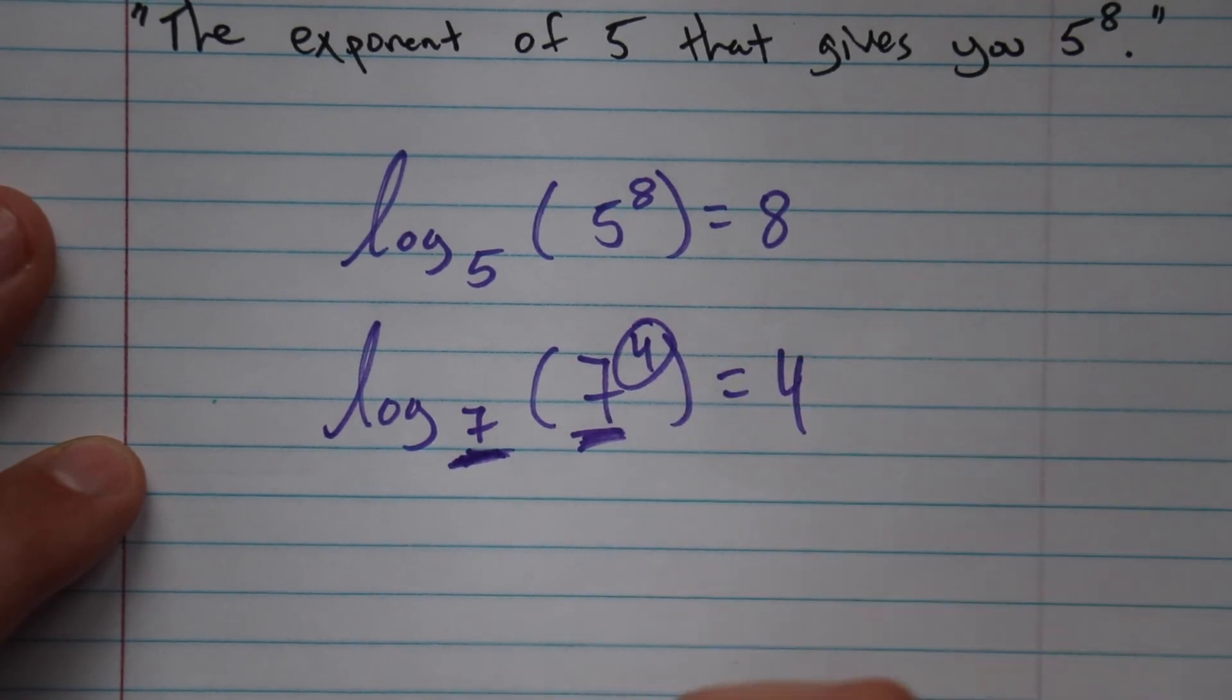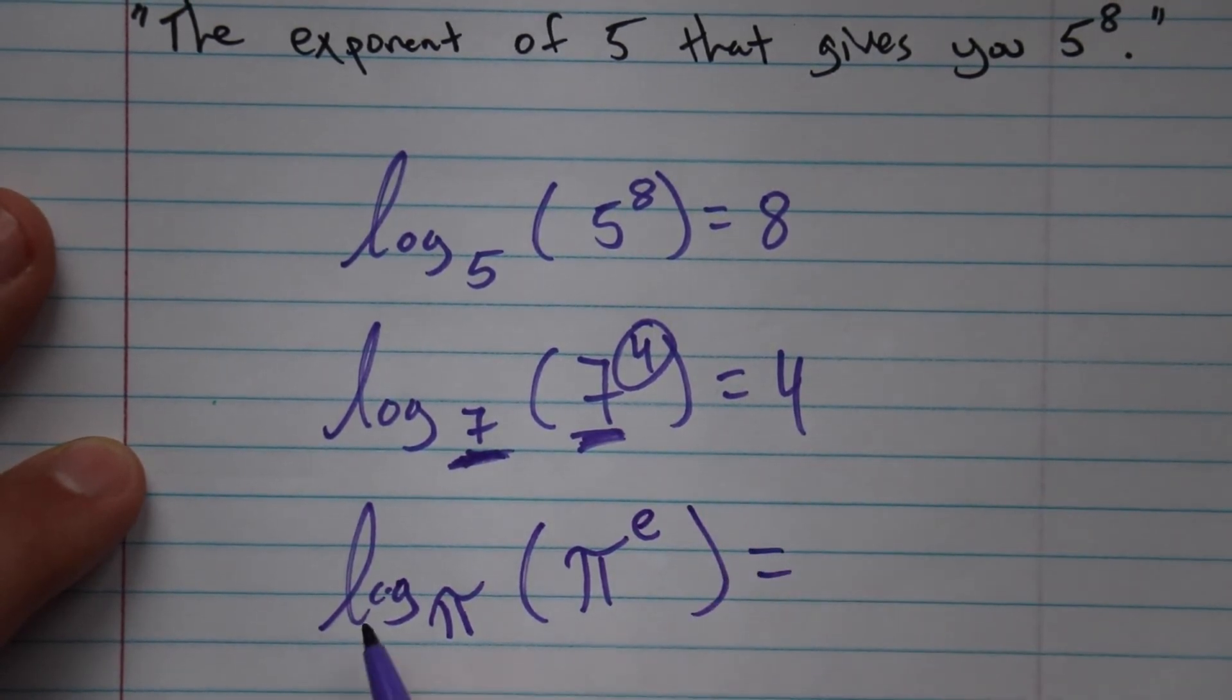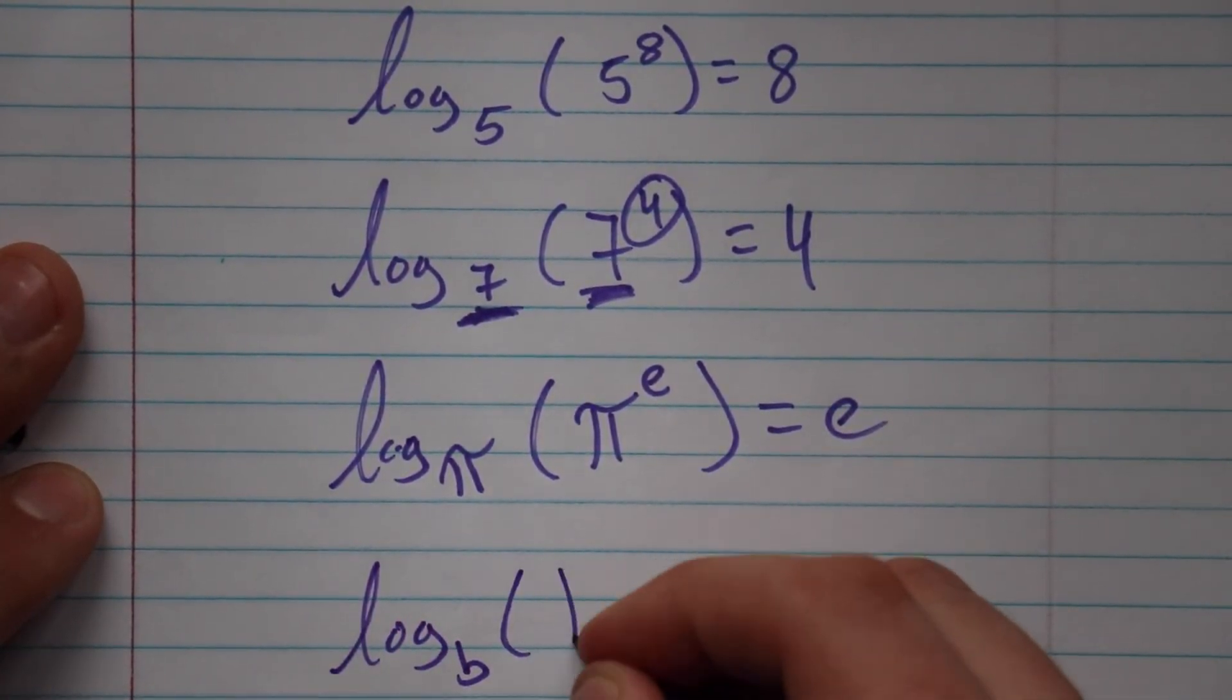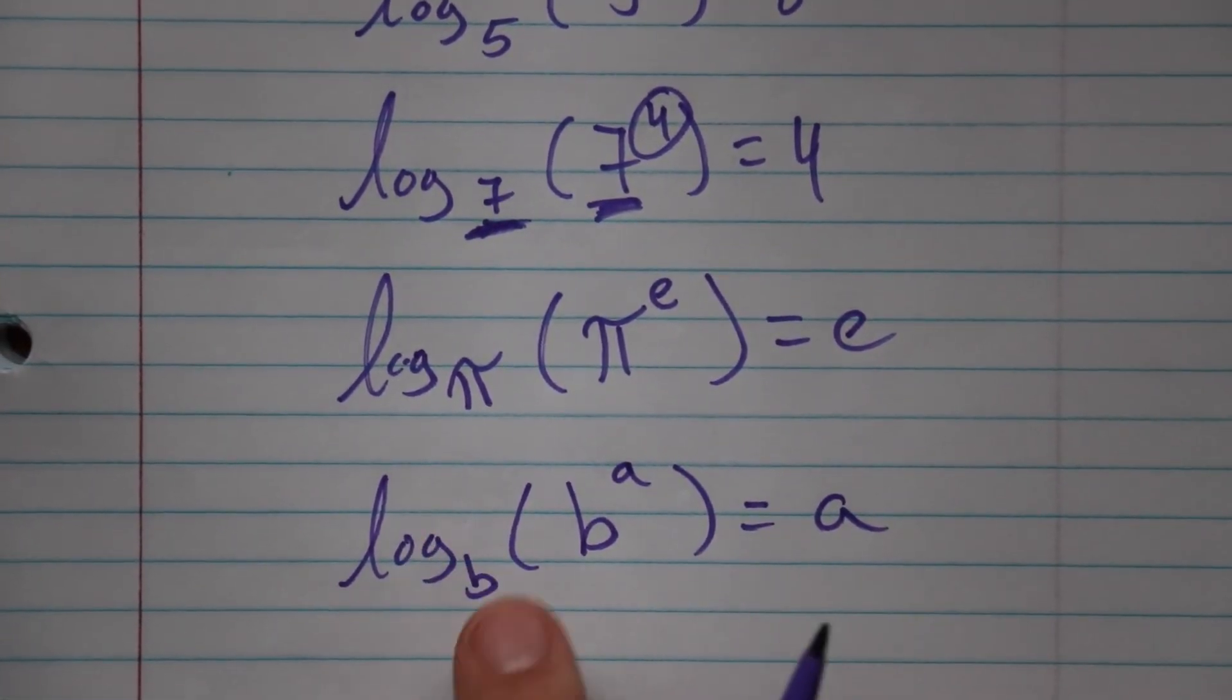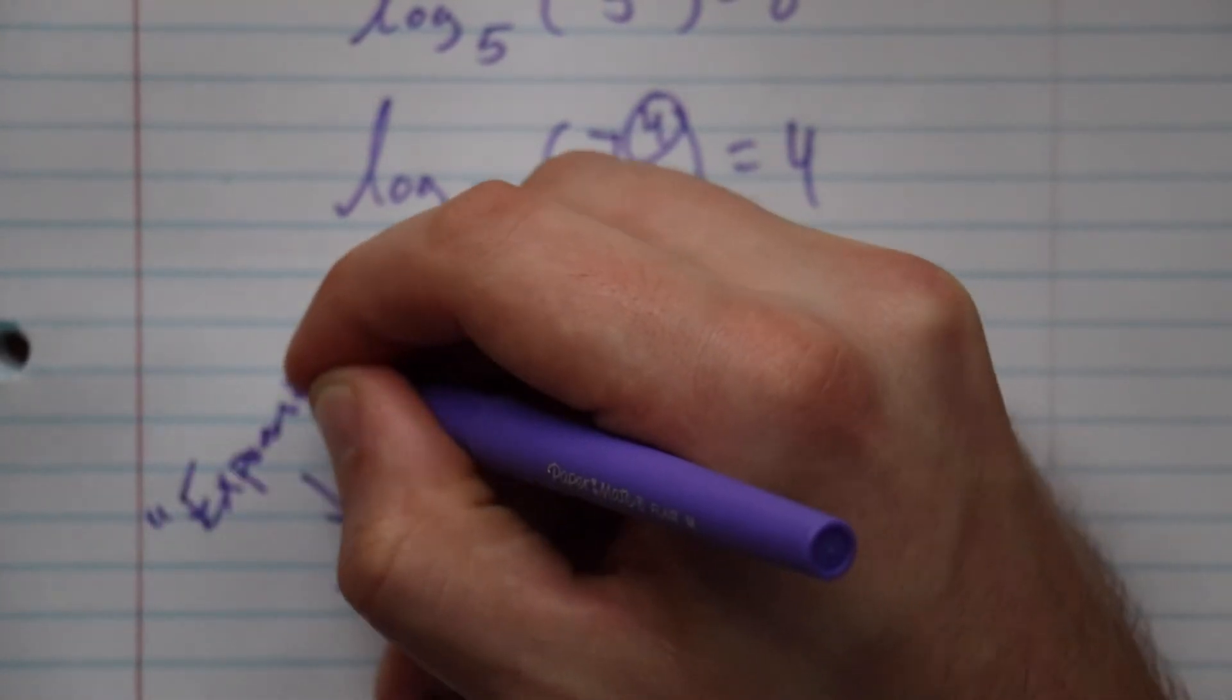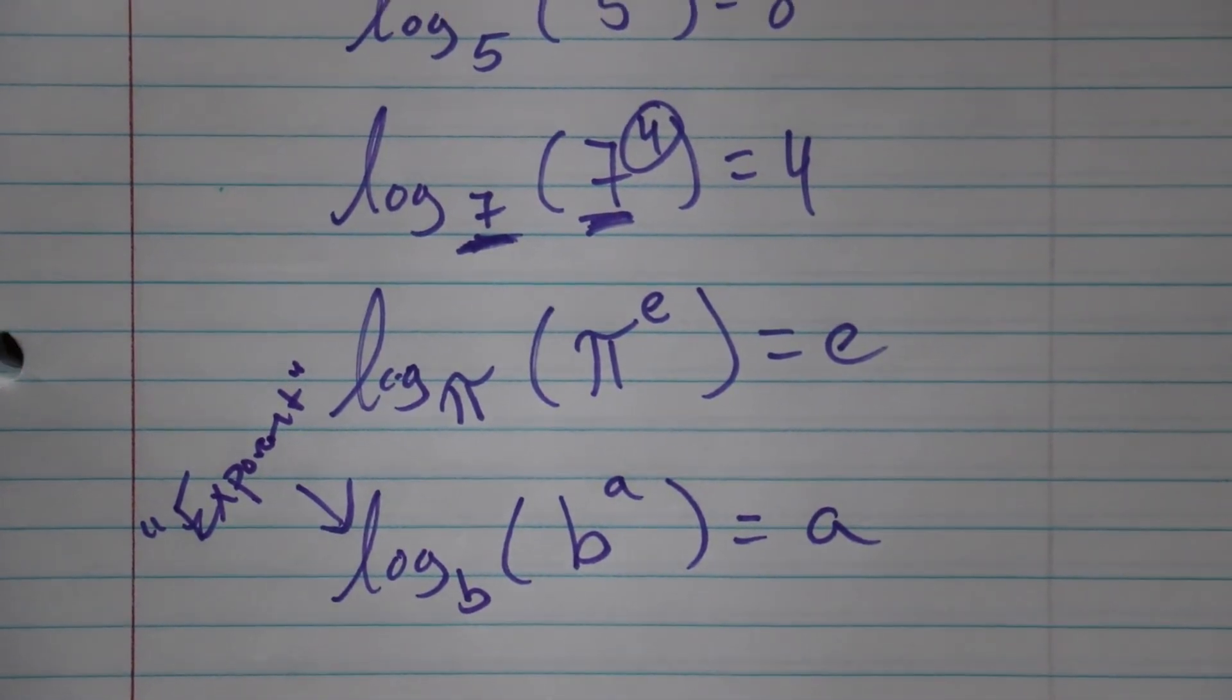If you can match up those bases, this property is going to be true. So the log of pi of pi to the e, what's the exponent of pi that gives you pi to the e? Well, e. So in general, we say that log base b of that base to a power equals that power, because it's the exponent of that base to an exponent. This you can think of as the word exponent or power.